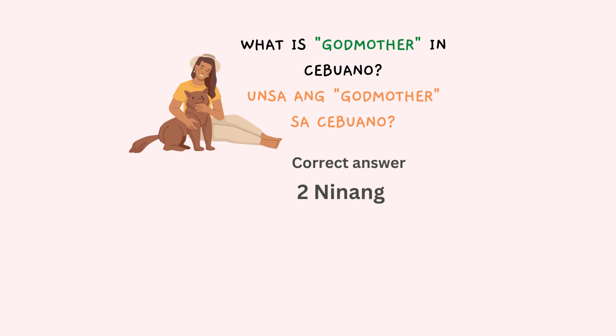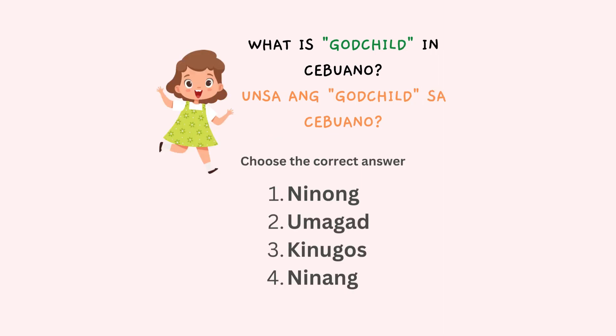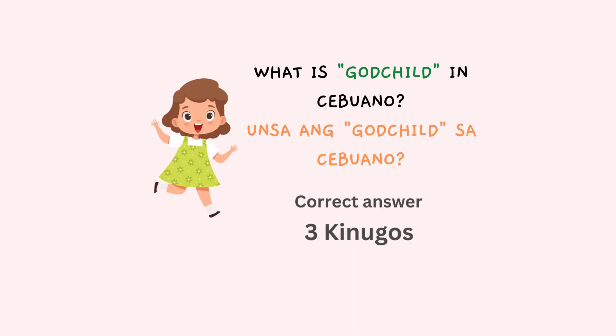Remember the second term: maninay. What is godchild in Cebuano? Unsa ang godchild sa Cebuano? Our choices are: number one, ninong; number two, umagad; number three, kinugos; number four, ninang. The correct answer is number three — kinugos. Godchild is kinugos.